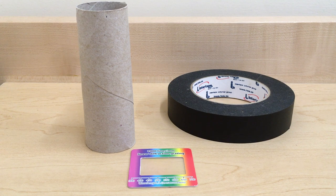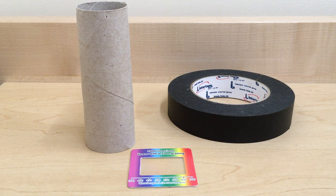This is a tutorial on how to make a spectroscope. For this project you will need an empty toilet paper roll, some opaque tape like masking tape, duct tape, or electrical tape, and a diffraction grating.